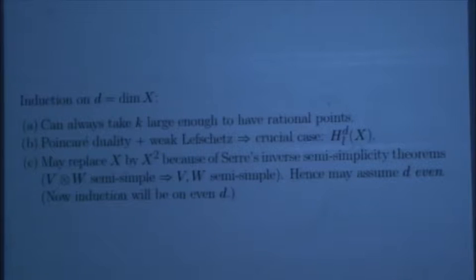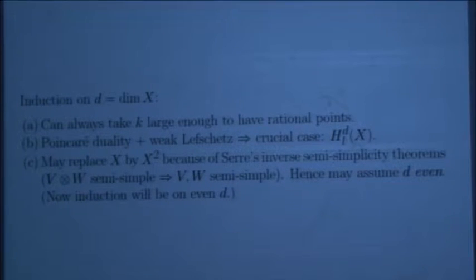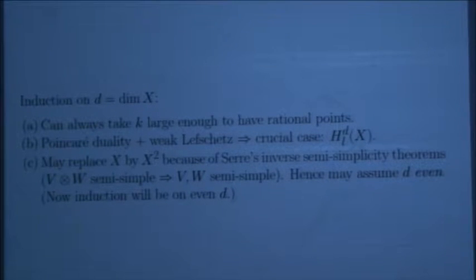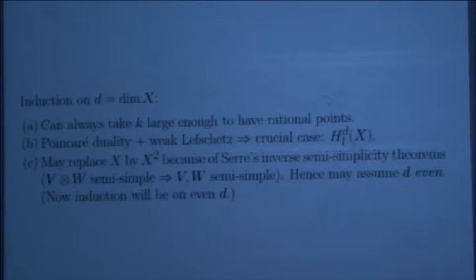I'll try to run through the argument. First, we can always enlarge the ground field. The argument proceeds by induction on the dimension of the variety. The really fleshy case is the middle dimension, because the rest you reduce to smaller dimensional varieties by weak Lefschetz and Poincaré duality.